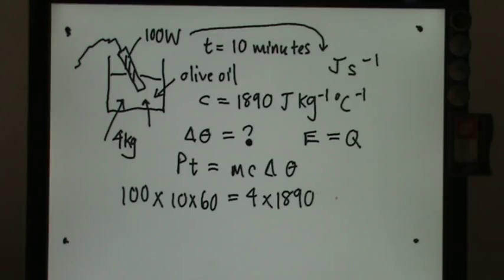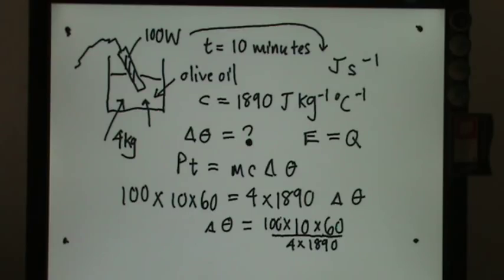You're supposed to find the temperature rise. So you use 100 times 10 times 60 over bracket 4 times 1890, not the other way around. A lot of students make the wrong calculation - they actually use 4 times 1890 divided by 60,000. No, wrong. It should be 100 times 10 times 60 over 4 times 1890.